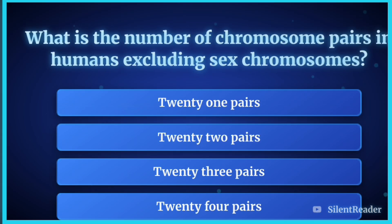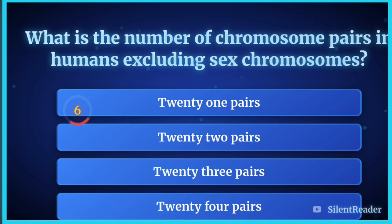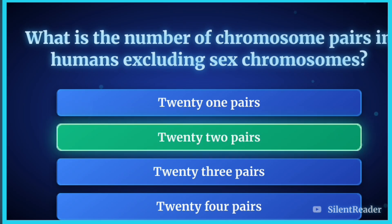What is the number of chromosome pairs in humans excluding sex chromosomes? The correct answer is 22 pairs.